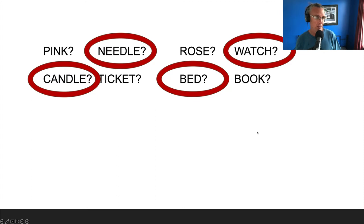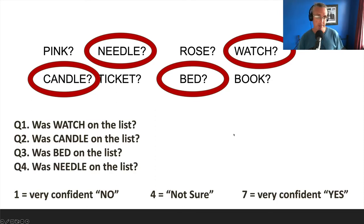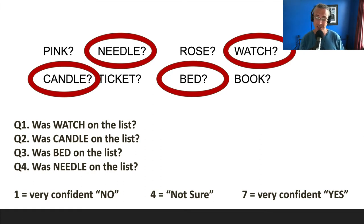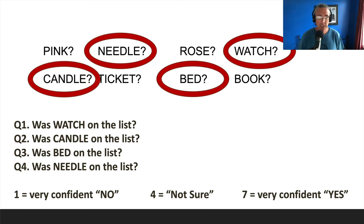We're going to do this with four items. For each item, I want you to write a number between one and seven that simultaneously captures whether you think it was on the list and how confident you are. If you're very confident it was not, give it a one. If you're very confident it was, give it a seven. You can use a three if you think it was not, or a five if you think it was. Use that whole continuum to capture both your answer and your confidence. So: watch, candle, needle — write down a number for each.